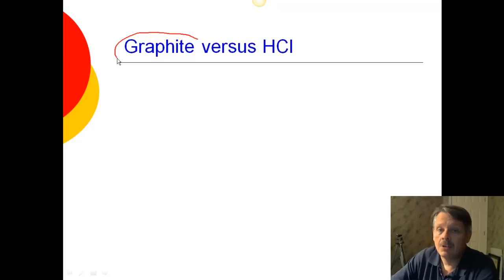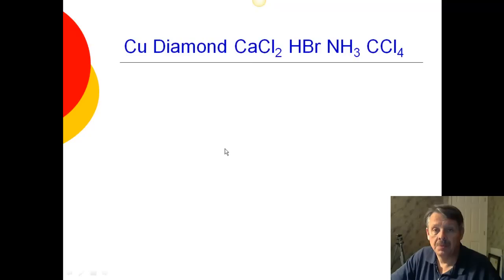Graphite. I can stop right there, because graphite, remember, is one of the network solids. We have graphite, and we have diamonds, and we have silicon dioxide. So those are your three, which are network solids, and they're going to be much, much stronger than anything else. And this is hydrochloric acid, which happens to be covalently bonded.